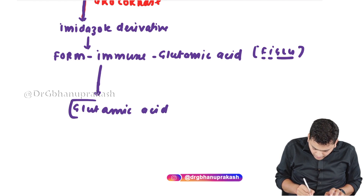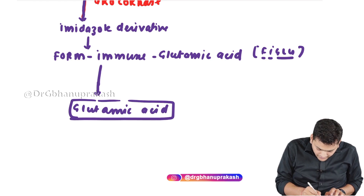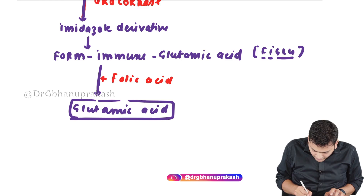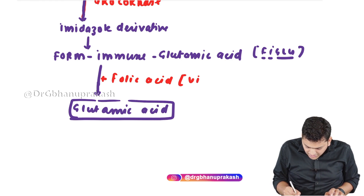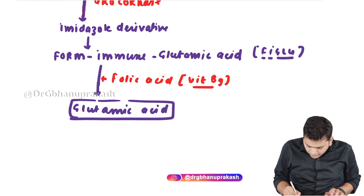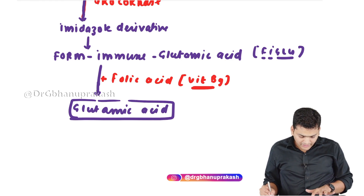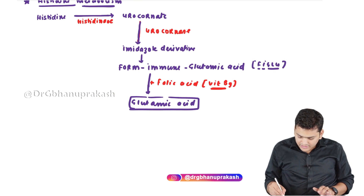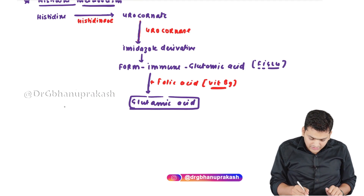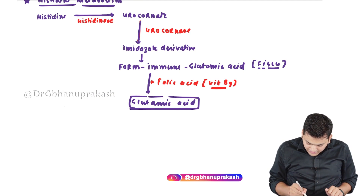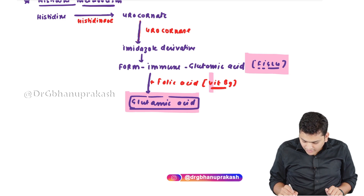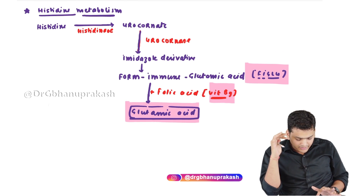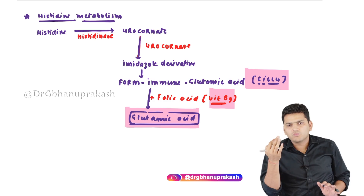For the conversion of FIGLU into glutamic acid, we require folic acid — that is vitamin B9. This is the most important statement in this entire histidine metabolism pathway. Our primary concern in this entire pathway is this last reaction: when FIGLU converts into glutamic acid, we require B9.